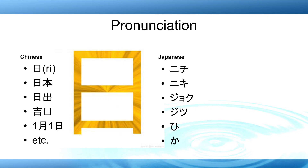The first day of the month is always pronounced a specific way, and the 20th is always pronounced differently too — not the regular pattern. There are specific pronunciations for specific situations in Japanese — it's not always the same rule. That's one of the difficult parts of Japanese for foreign learners.